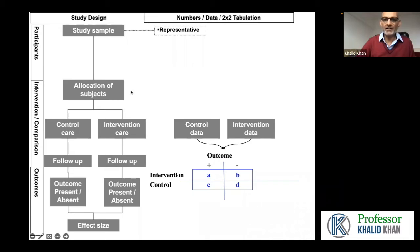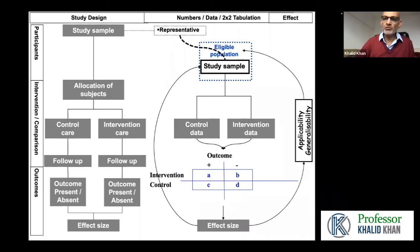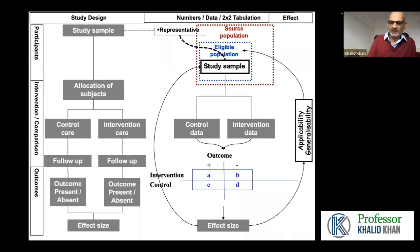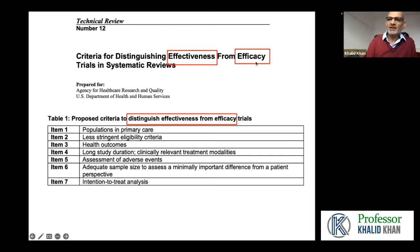The effect size once calculated shows a result that is true for the study sample. If the result is true for the study sample, could it also be true for the population? This is called generalizability. When we talk about effectiveness, we are normally talking about studies that have produced results that can be generalized outside the study sample. When we are talking about efficacy, we normally do not have that confidence about generalizability.